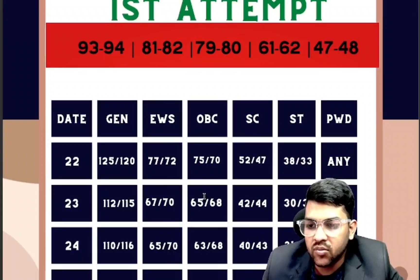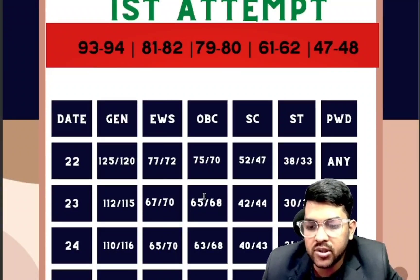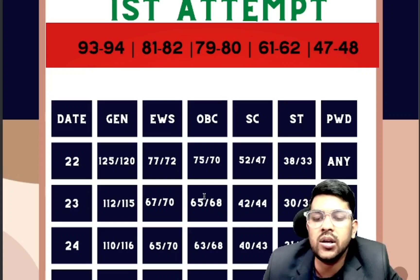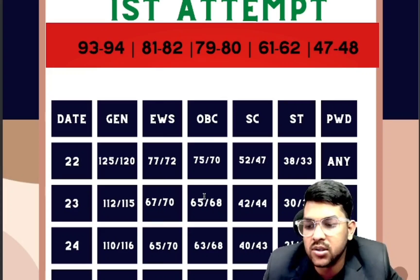For January 24th, General category requires 110 marks in the first shift and 116 in the second shift. EWS requires 65 and 70, OBC requires 63 and 68, SC requires 40 and 43, and ST requires 31 and 33 marks.